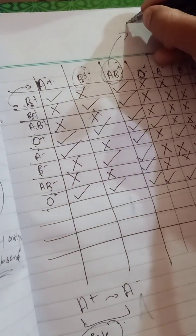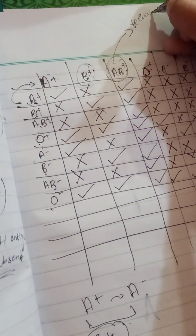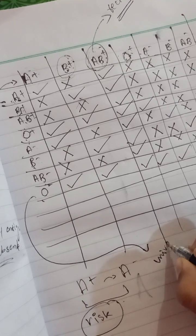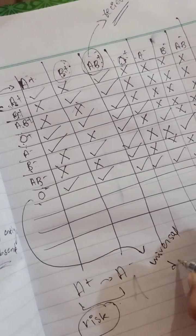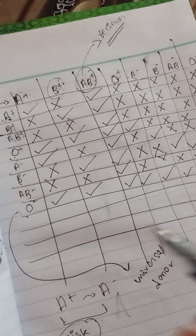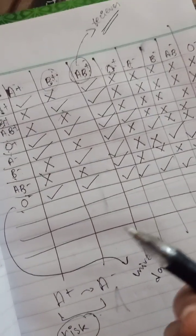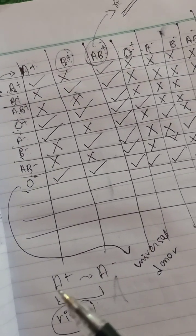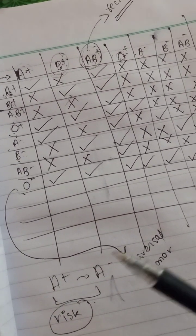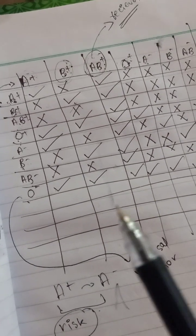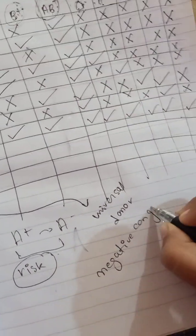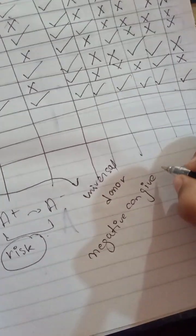O can give blood to everyone. AB positive is the universal receiver and O negative is the universal donor. AB is the universal receiver that can receive from both positive and negative. O negative is the universal donor because they have no antigen and no RH factor.